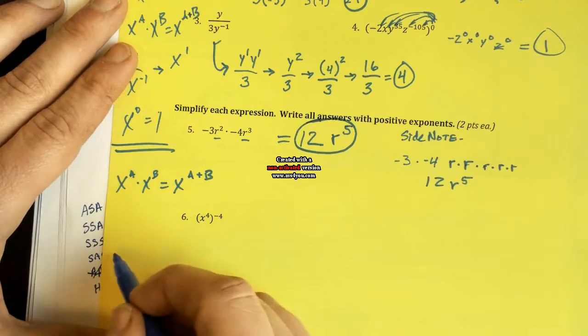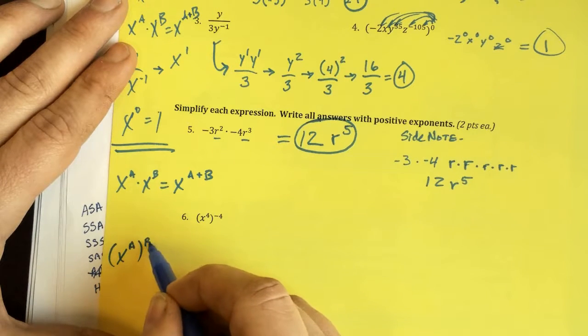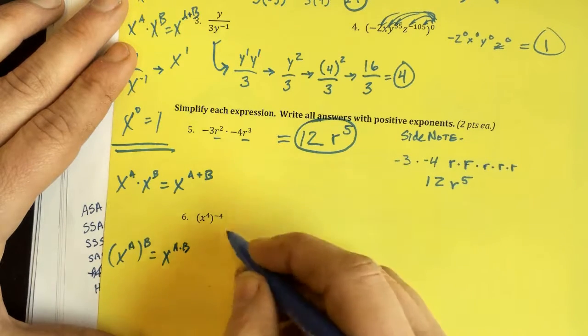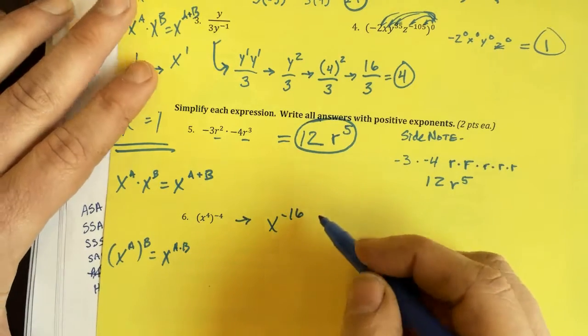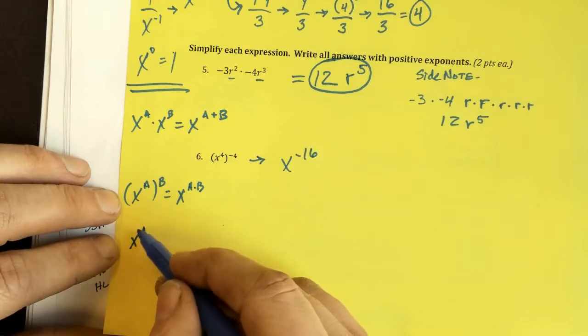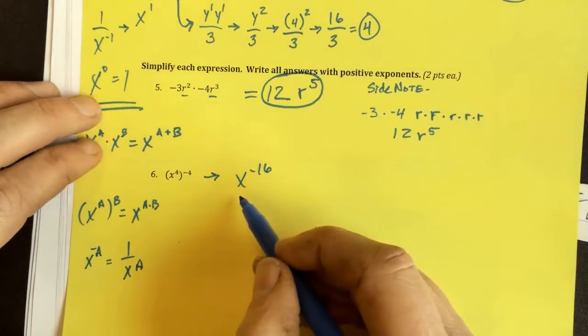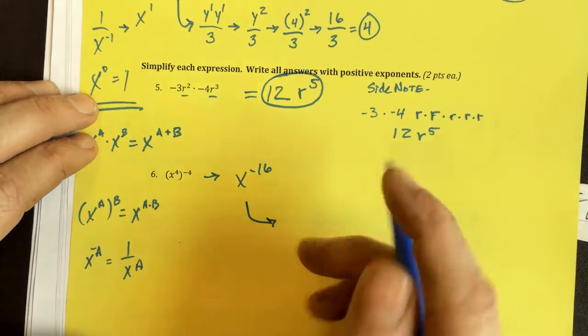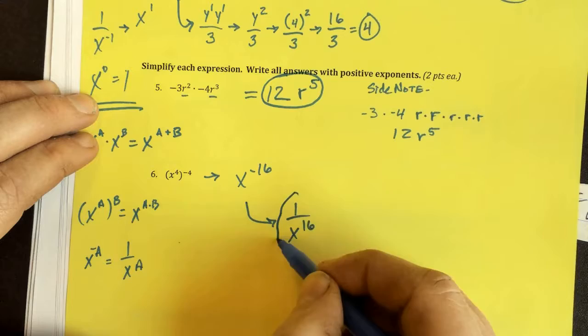Here we have what rule. What rule is this? Power of a power. And the shortcut is to multiply them. So, 4 times negative 4 is negative 16. Well, we know that when we see that negative exponent, we rewrite it under a fraction or flip it to the other side of the fraction line wherever it's at. So, this should be rewritten as 1 over x to the 16. And we're done with that one.